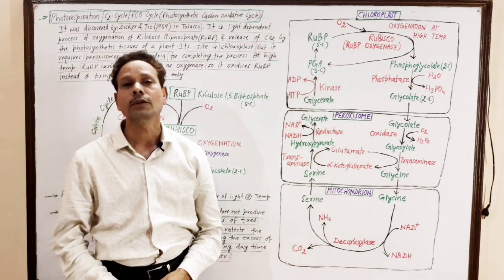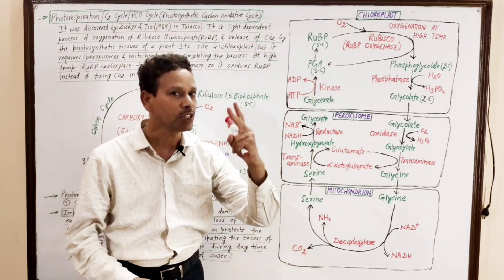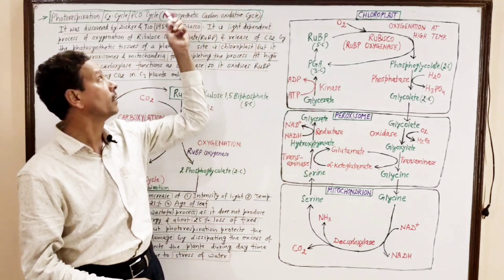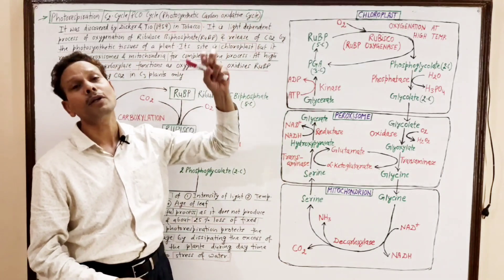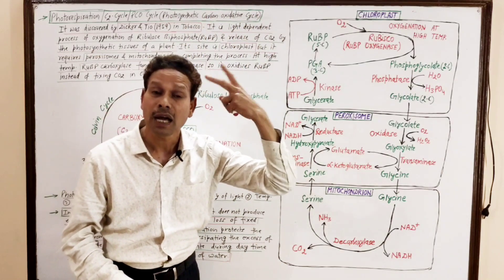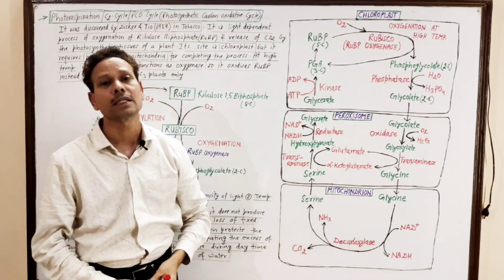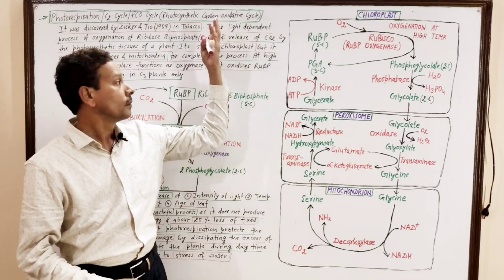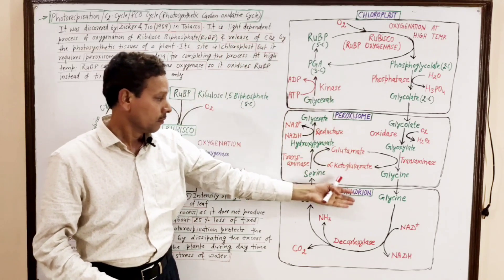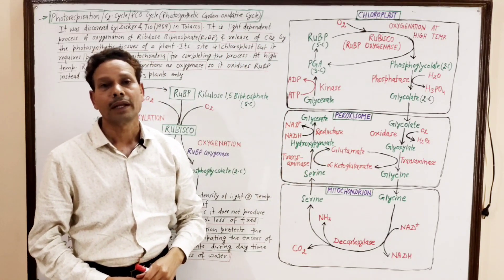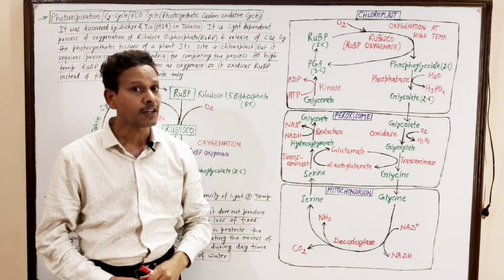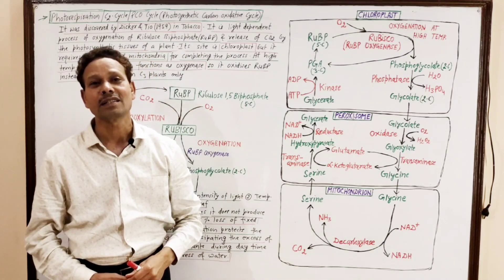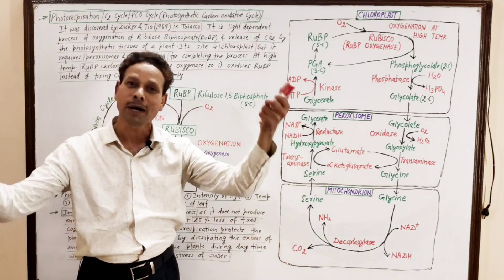This is all about the C2 cycle, PCO cycle — photosynthetic carbon oxidative cycle — or photorespiration. In the next lecture, tomorrow, we will discuss the CAM pathway.